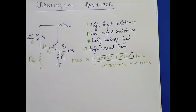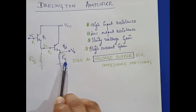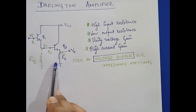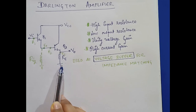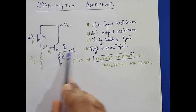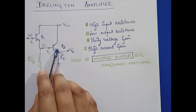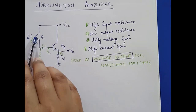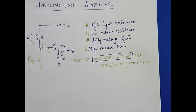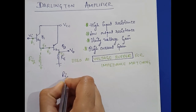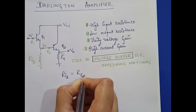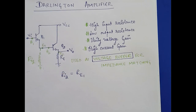Let's do some analysis of the Darlington amplifier. The resistance RE is the emitter resistance of the Q2 amplifier and is a load for Q2, because in common collector configuration we take the output at the emitter terminal. This resistance RE2, which is the input resistance for Q2 amplifier, is also the load resistance for Q1 amplifier. Since this is common collector configuration, we can say that ri2 equals the emitter resistance for Q1 amplifier.